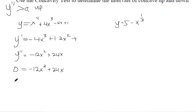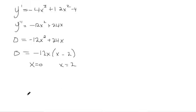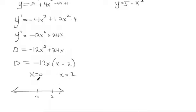We set the second derivative equal to 0. It's quadratic, so let's solve by factoring — I'll factor out negative 12x, giving us x minus 2. Setting each factor equal to 0, we get x equals 0 and x equals 2. Those are the potential places where it could switch concavity. But we want to check that it actually switches — just like critical points are not guaranteed to be maxes or mins, the same applies to potential inflection points where the second derivative equals 0. So check what's happening to the left and right of them.